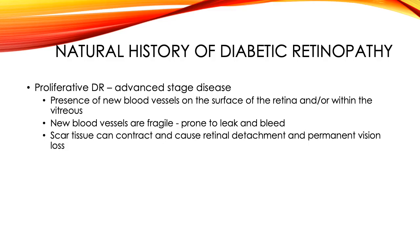The final stage of diabetic retinopathy is proliferative diabetic retinopathy. This is characterized by new blood vessels on the surface of the retina and/or within the vitreous. These new blood vessels are prone to leaking and bleeding because they're weak and fragile. The leaking blood vessels can cause hemorrhages and macular edema, which both can affect the vision. In addition, an inflammatory response triggers scar tissue formation, which can cause traction on the retina with subsequent detachments and permanent vision loss.